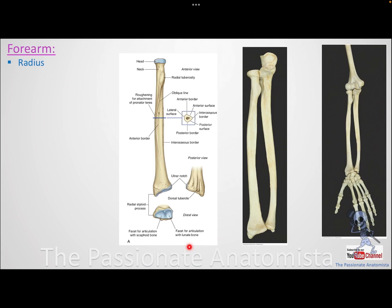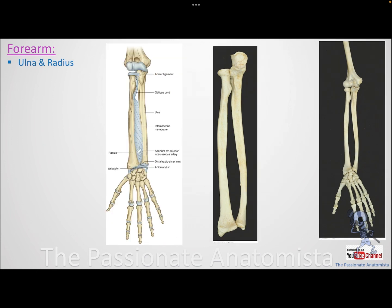At the distal end of the radius you will find the styloid process and the ulnar notch for the distal radio-ulnar joint. For the ulna, it forms part of the wrist joint but does not directly articulate with a carpal bone — instead there is an articular disc below the head of the ulna. The wrist joint is called radiocarpal because it is predominantly formed by the radius.